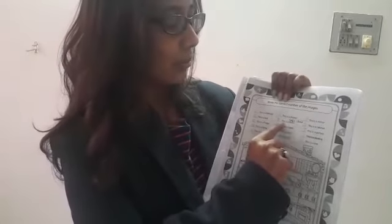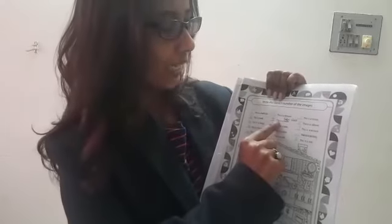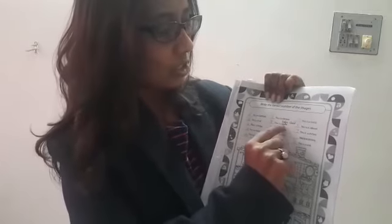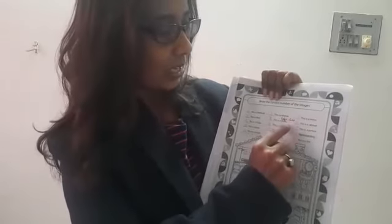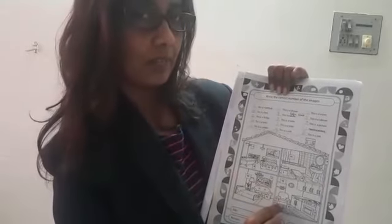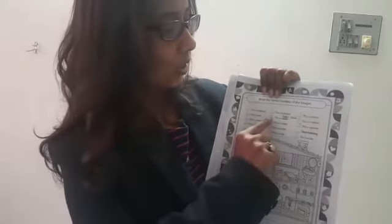Here there is a mistake — parents, you have to write here: this is a sofa chair. Please strike out what is printed and write sofa chair. Which number is given to sofa chair? It is number 4, so here you have to write number 4.